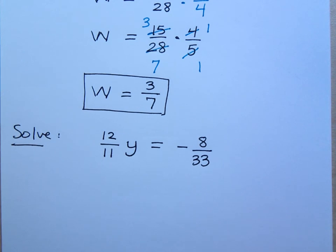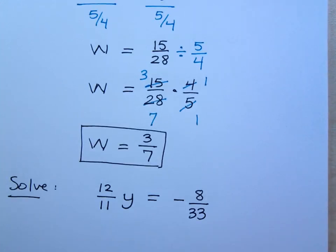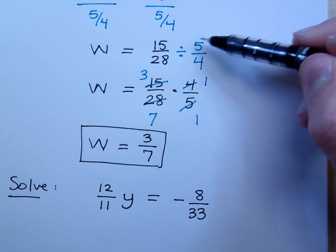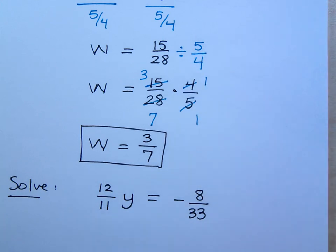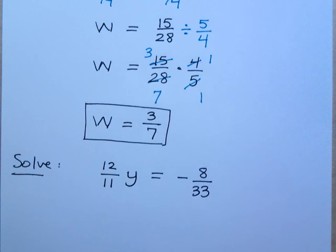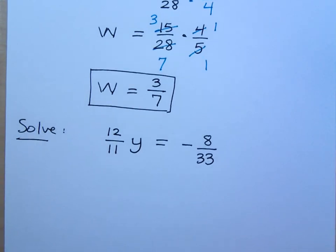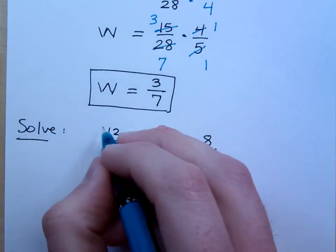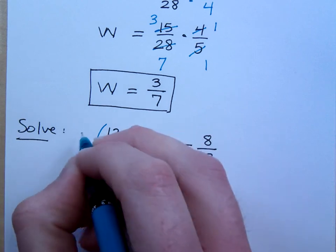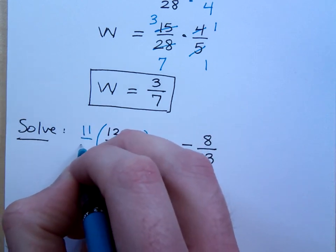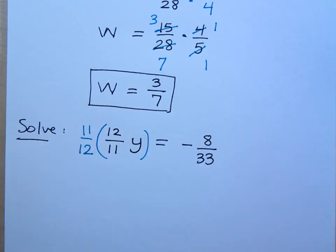Now, the last time we had a problem like this, we were dividing by the coefficient, right? But when you were dividing by that coefficient, what did you end up doing with that coefficient? We were dividing by it, but we ended up multiplying times the reciprocal, right? You can do the same thing here. Instead of going through the whole rigmarole of dividing by that fraction, multiply this times the reciprocal.